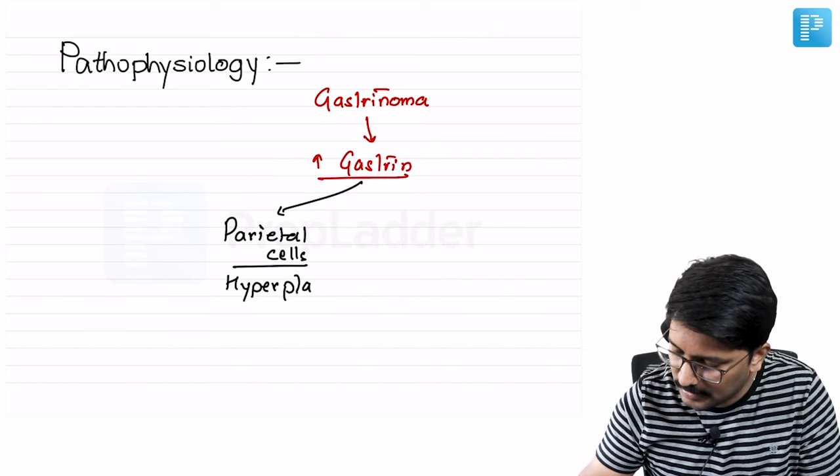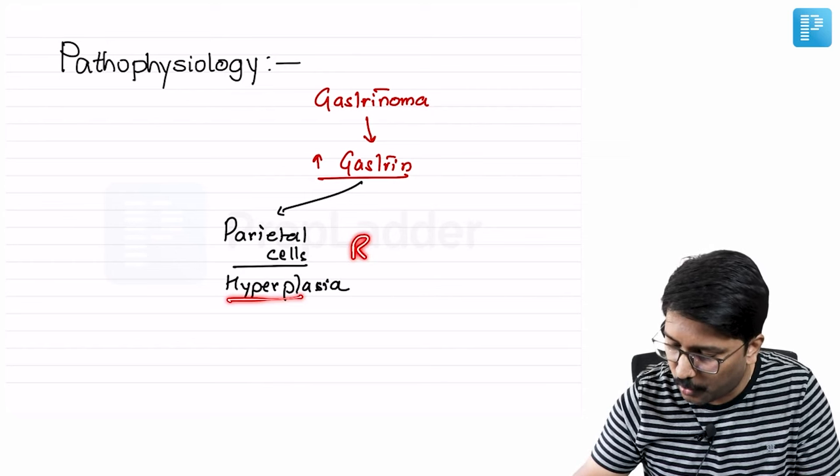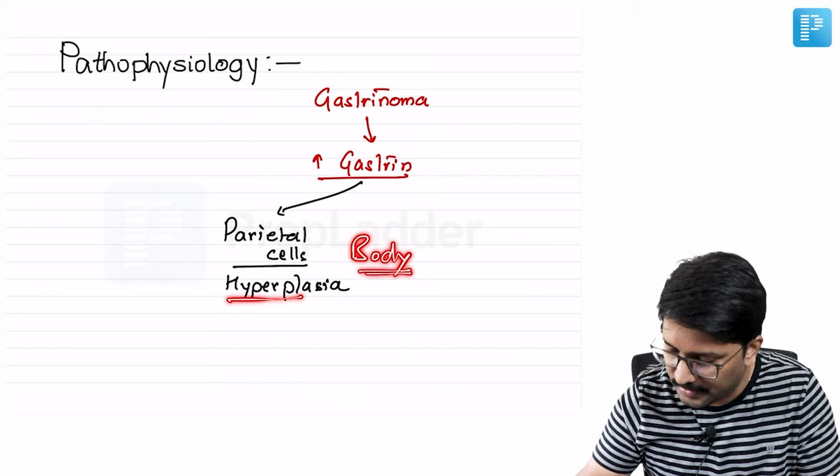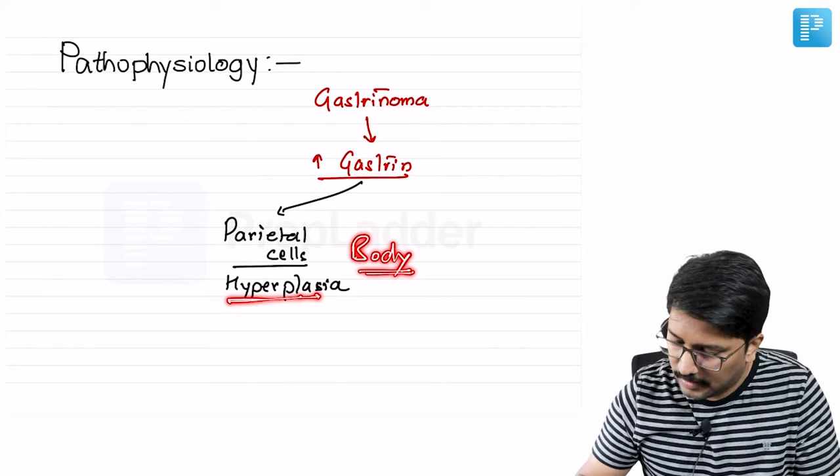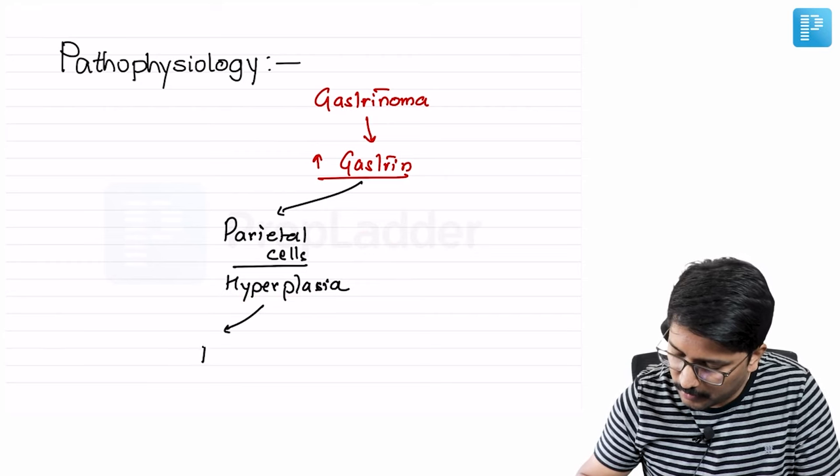You might see increased gastric, thick gastric mucosal folds on the endoscopy, mainly in the body part of the stomach where we have a very high density of the parietal cells. And this hyperplastic parietal mucosa will now start producing increased amount of hydrochloric acid.